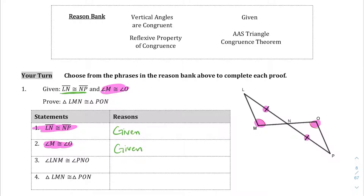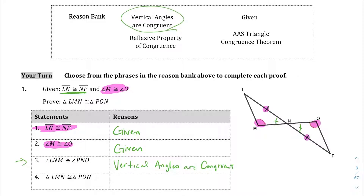Now the one that really connects all the dots here is statement 3, where angle LNM — this angle right here — is congruent to angle PNO, which is that angle right there. I'm going to put one hash mark through those to signify they're the same. How do we know they're the same? When you have two line segments — in this case segment LP and segment MO — intersecting at point N, those create vertical angles. And so we would say vertical angles are congruent.